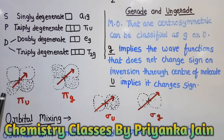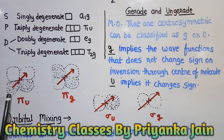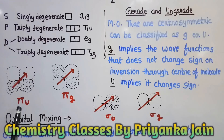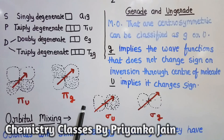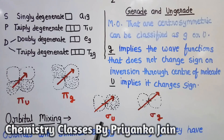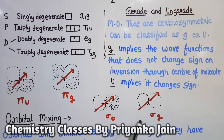For example, consider a π orbital — when inversion through the center of the molecule is performed, if the sign changes, it is given the abbreviation u, so it is π u type. If it undergoes inversion without any change in sign, it is symmetric and is given g, specifically π g. Similarly, a σ orbital that changes sign on inversion is σ u, while one that does not change sign is σ g.